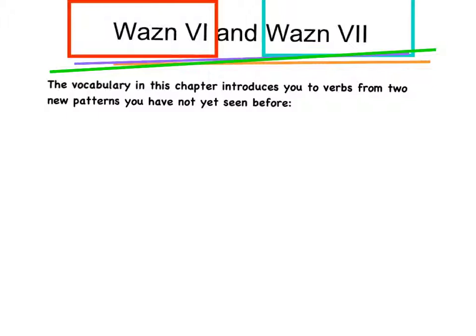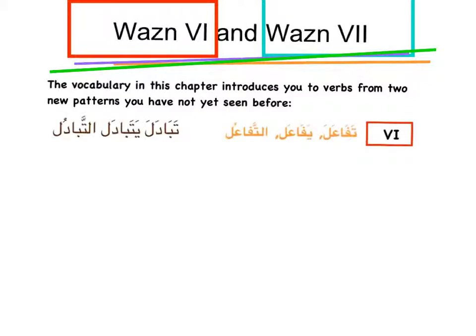The vocabulary in this chapter — chapter 11 — introduces you to verbs from two new patterns you have not yet seen before, namely wazn 6 and wazn 7. Wazn 7: the pattern is تفاعل (tafa'ala). An example is to exchange something.